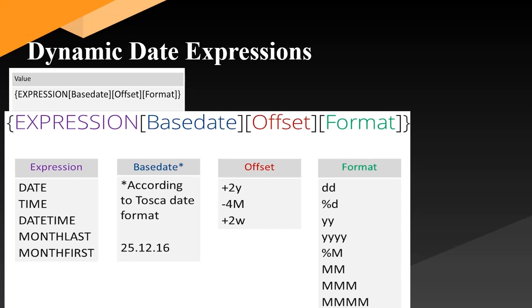Before I walk you through the actual Tosca tool, let me cover some theoretical topics. The dynamic date expression is specified in curly braces with the expression in front of the value. Then you specify the base date in square brackets, then the offset you would like to use in square brackets, and then the format in which you would like the value to be returned, also in square brackets.